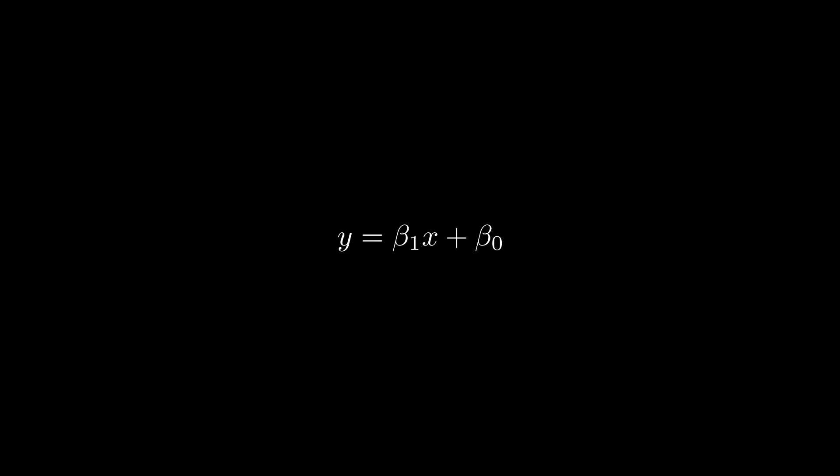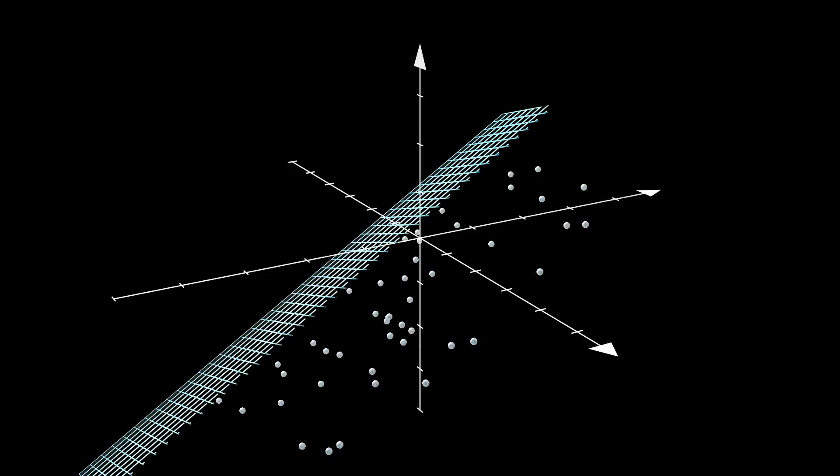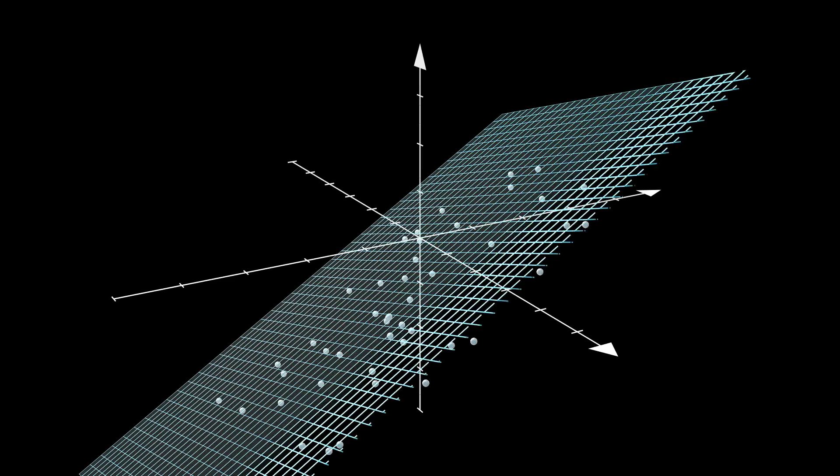We can also extend to multiple input variables, so x1, x2, x3, with beta 1, beta 2, and beta 3, and so on, acting as slopes for each of those variables. In these higher dimensions, you would visualize the linear regression as a hyperplane.